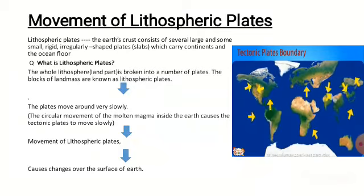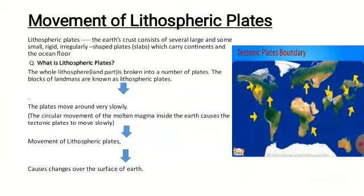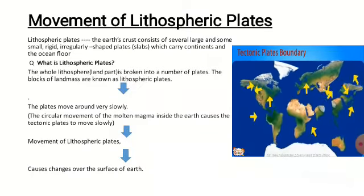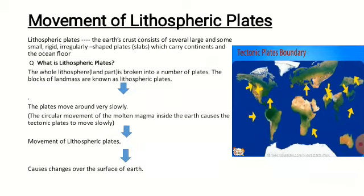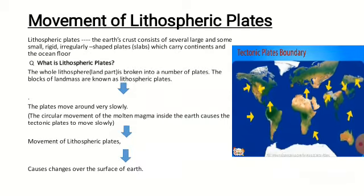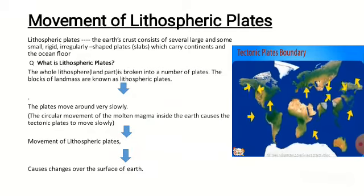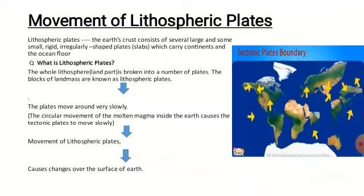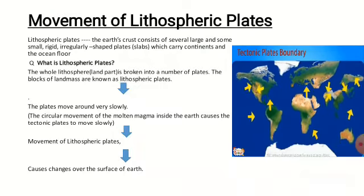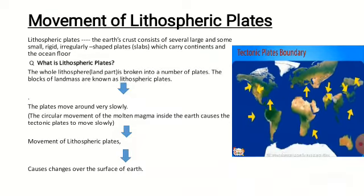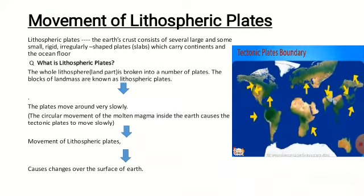What are lithospheric plates? The definition: Earth's crust consists of several large and some small, rigid, irregularly shaped plates — meaning slabs — which carry the continents and the ocean floor. The whole lithosphere, meaning the land part, is broken into a number of these plates.